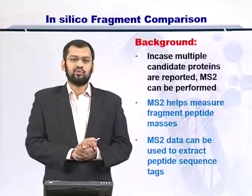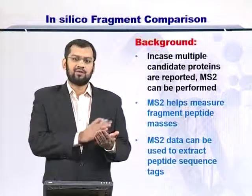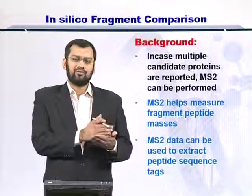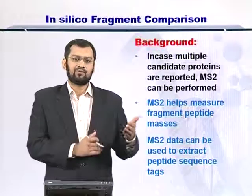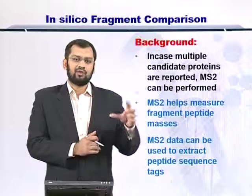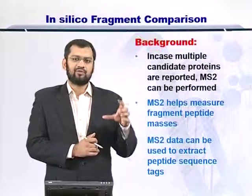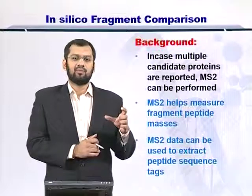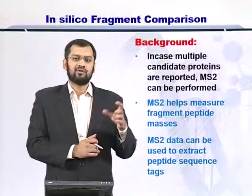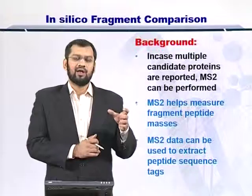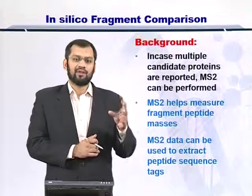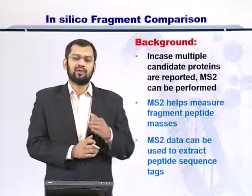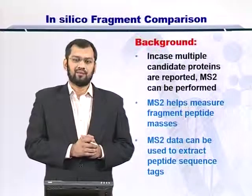In MS2, what you do is you fragment the intact molecule and then you have the fragment molecular weights. Given this list of MS2 fragment molecular weights, you can compare each of these peaks that is reported with the molecular weights of amino acids and see if there are some consecutive peaks that are reported in the experiment.